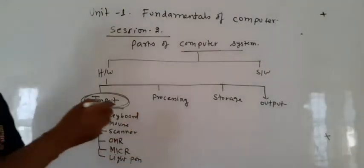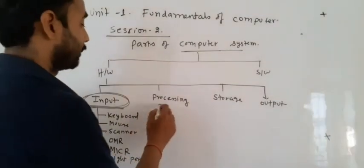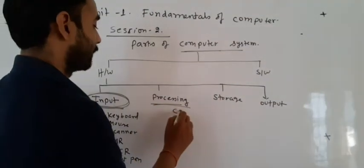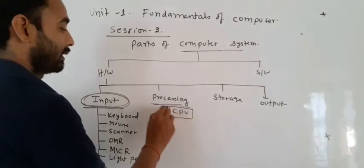Processing devices. Processing devices means basically CPU. CPU is the brain of the computer system.